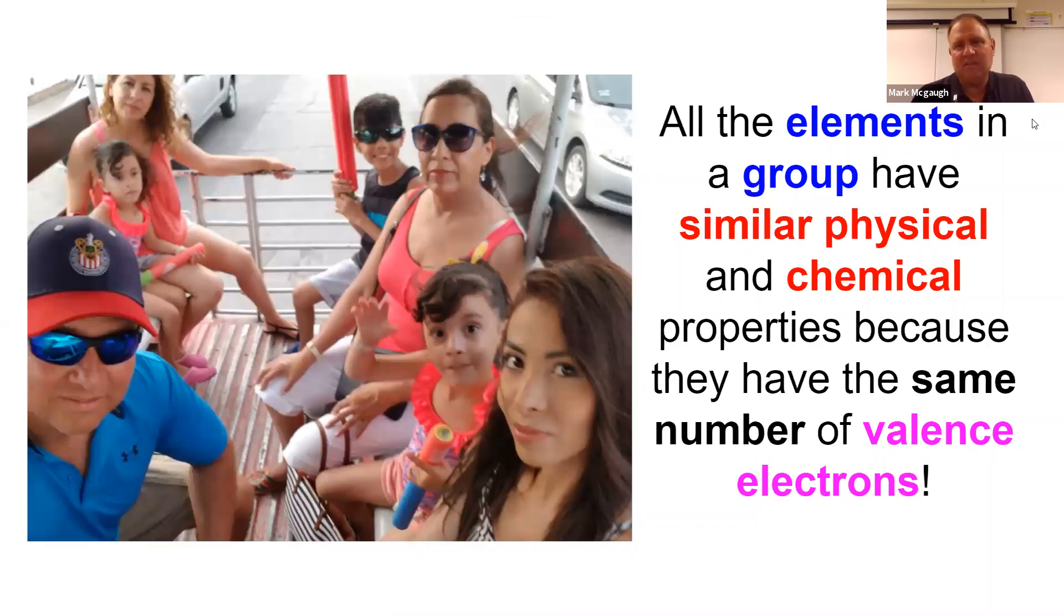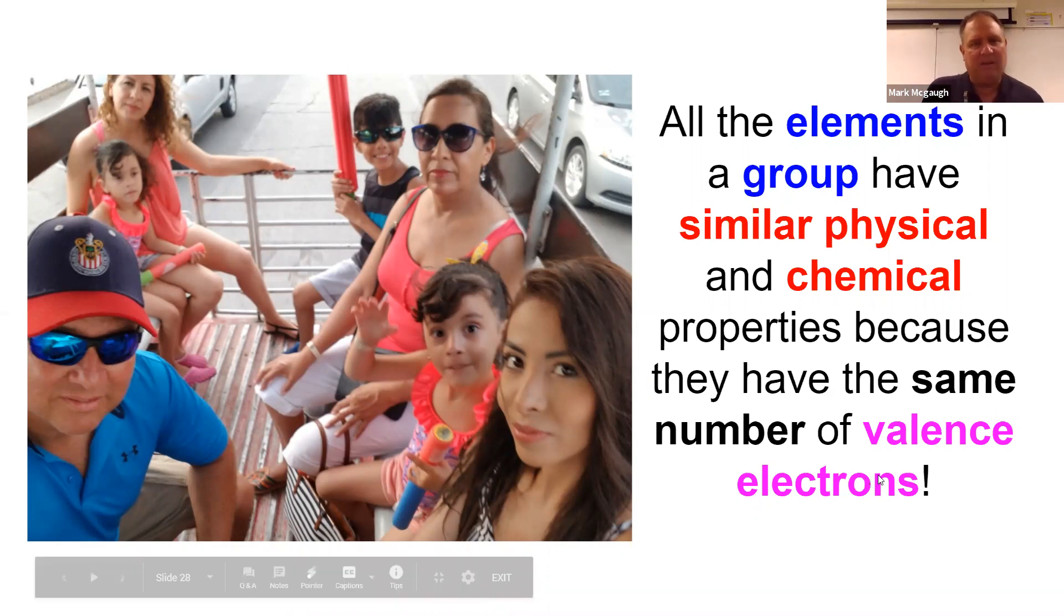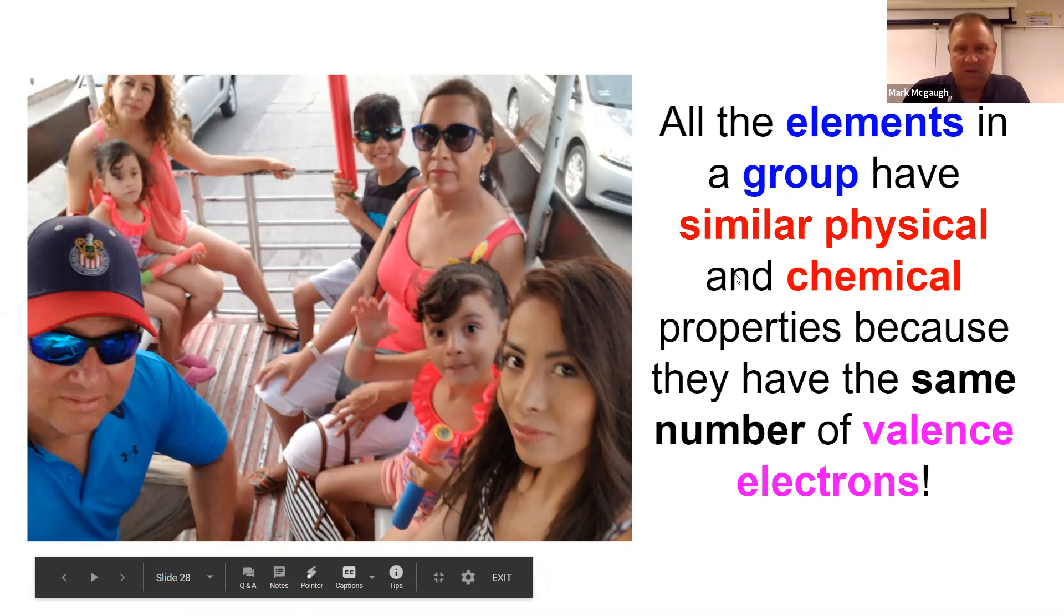Now all the elements of a group or a family have similar physical and chemical properties because they have the same number of valence electrons. I've been told all my kids and all my grandkids have my nose. We've all got the same nose, so that's our similar physical property.